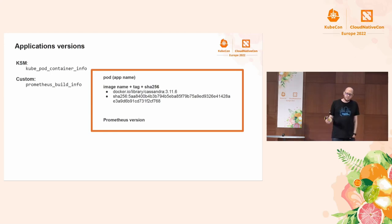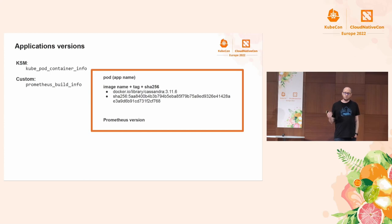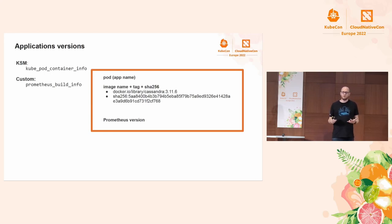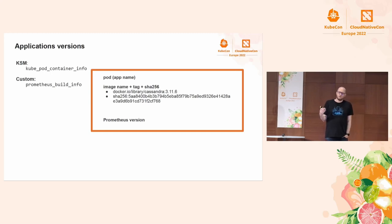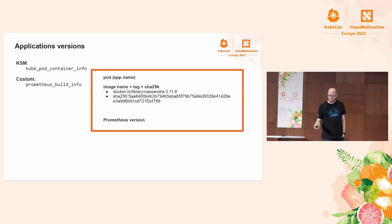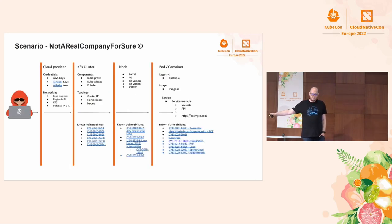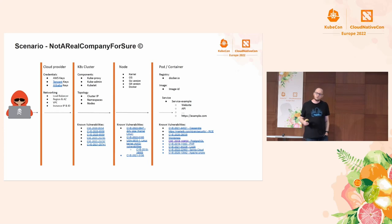Going further into applications, kube-state-metrics gives us information about the image and the tag of the containers running in the cluster. We know which image is running, which tag is being used, which hash it is, and even which registry they are using. Some applications also expose more specific version information or configuration options in custom metrics like prometheus_build_info. Now we can add even more CVEs for each application found in the cluster.